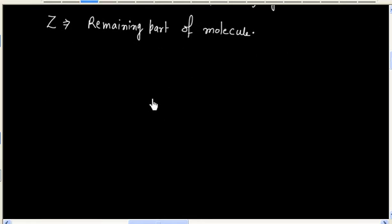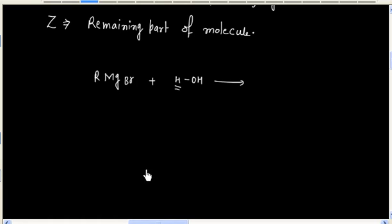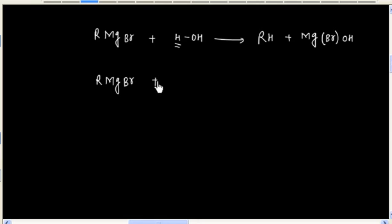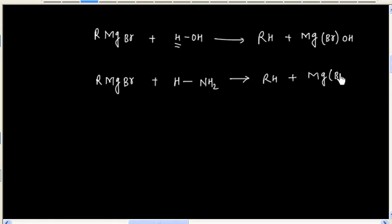Now let us discuss different reactions in which Grignard reagent acts as a base. Grignard reagent can react with water. In this case, this hydrogen is acidic, so we will have alkane and this is the side product. Even ammonia has an acidic hydrogen, so Grignard reagent can react with ammonia and it will form alkane.